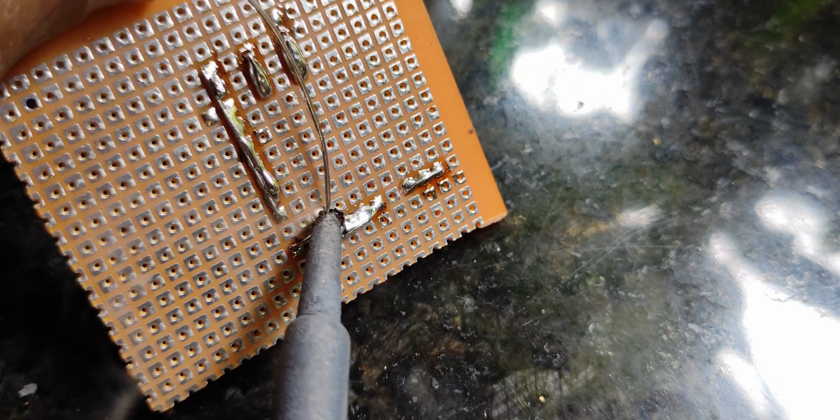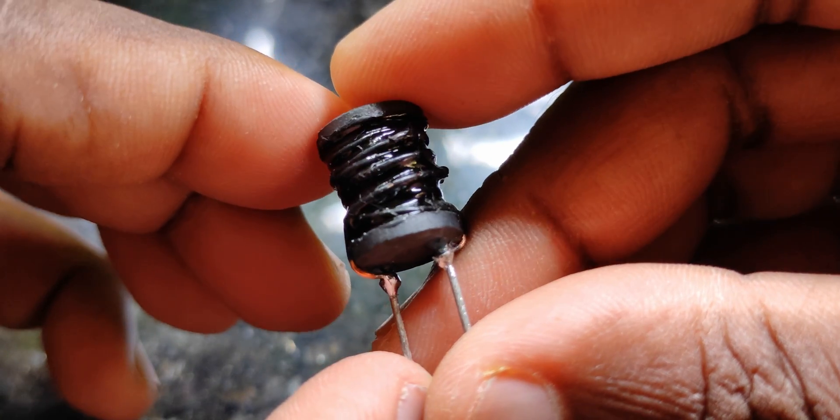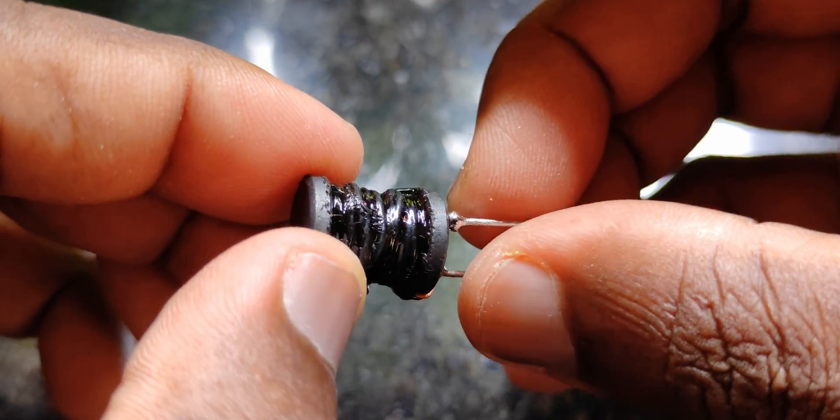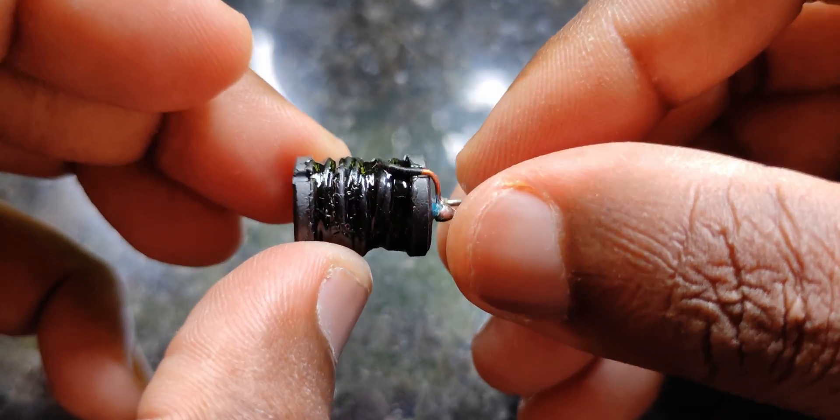Solder it well. This is the last and final component: a 100 microhenry inductor. Anything between 100 to 150 microhenry will be fine. I wound this myself. If you don't know how to do that, you can buy it online or from your nearest store.